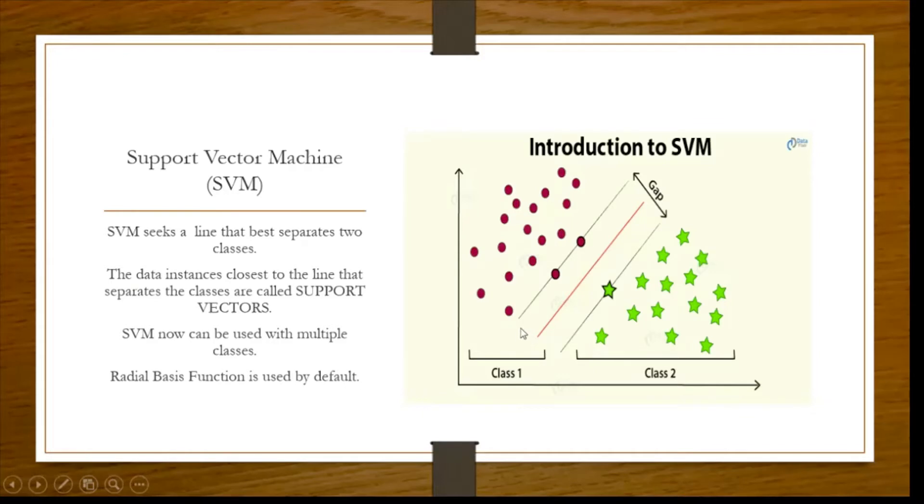Now these data instances as you can see here, these circles and these stars, these are called support vectors because these are closest to this line which is being drawn. And they help to classify the data. And what is the function we are using here by default is the radial basis function. Now you see here, this is the gap and these are the support vectors. This is the line drawn.